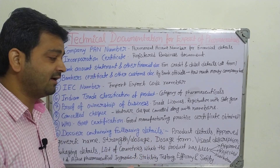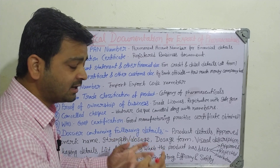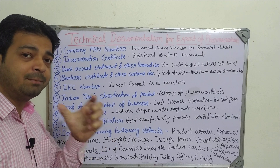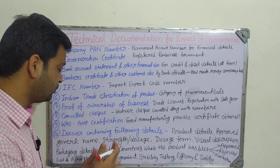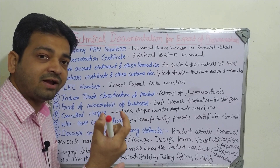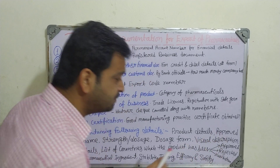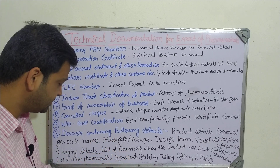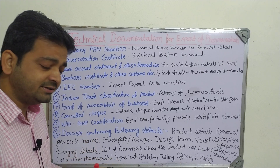The tenth one is the dossier containing product details. This includes the approved generic number, strength per dose (e.g., 250 mg, 500 mg, 750 mg), dosage form — solid, liquid, gas, or parenteral — visual description, whether prescribed under a registered practitioner or under Schedule H, which schedule of the drug it belongs to, and packing details — such as aluminum foil or plastic — and whether the packaging has any interaction with the drug content or molecules.